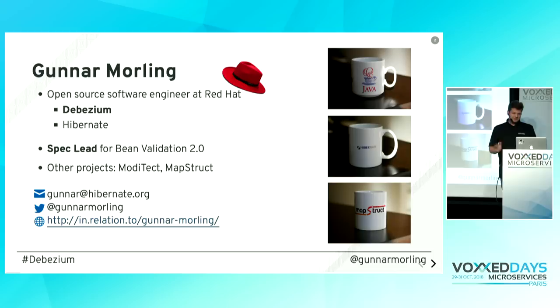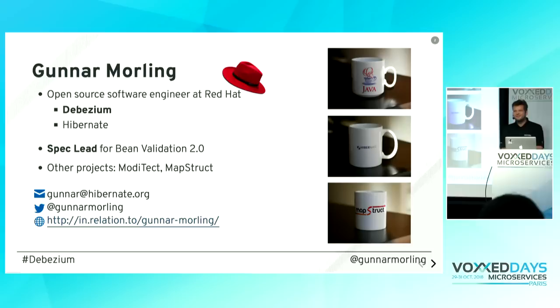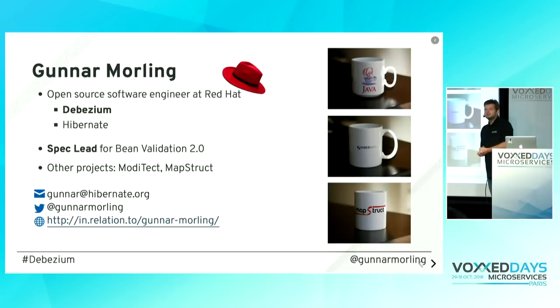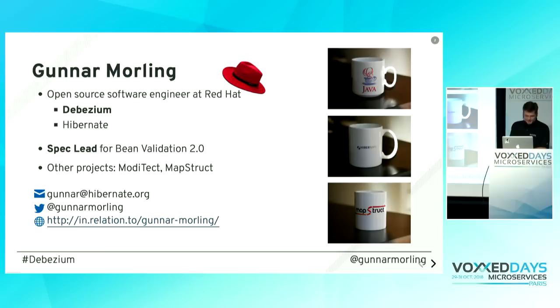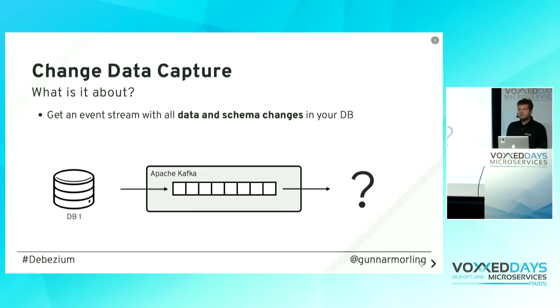A bit about myself: I work as a software engineer at Red Hat. I'm the lead of the Debezium project, which is what I'm going to talk about today. Before that I was a member of the Hibernate team for a long time — among other things I led the Bean Validation 2.0 spec. I hear there's a very good book by a guy living in Paris about Bean Validation 2.0 — I highly recommend it. If you'd like to follow me, check me out on Twitter.